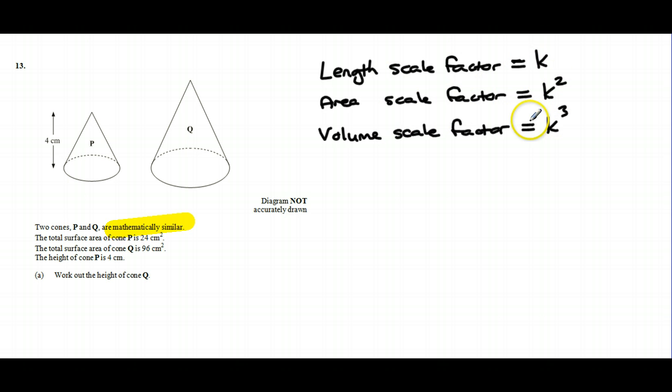The information they actually give us is they give us the relationship between the areas. So they tell us that Q is 96 centimeters squared and P is 24 centimeters squared. So we can actually work out the area scale factor, how many times bigger the area is, by doing the larger area divided by the smaller area, and that turns out to be 4. So if that is 4, then what number squared gives 4? Well actually it means that the length scale factor must be the square root of 4, which is 2.